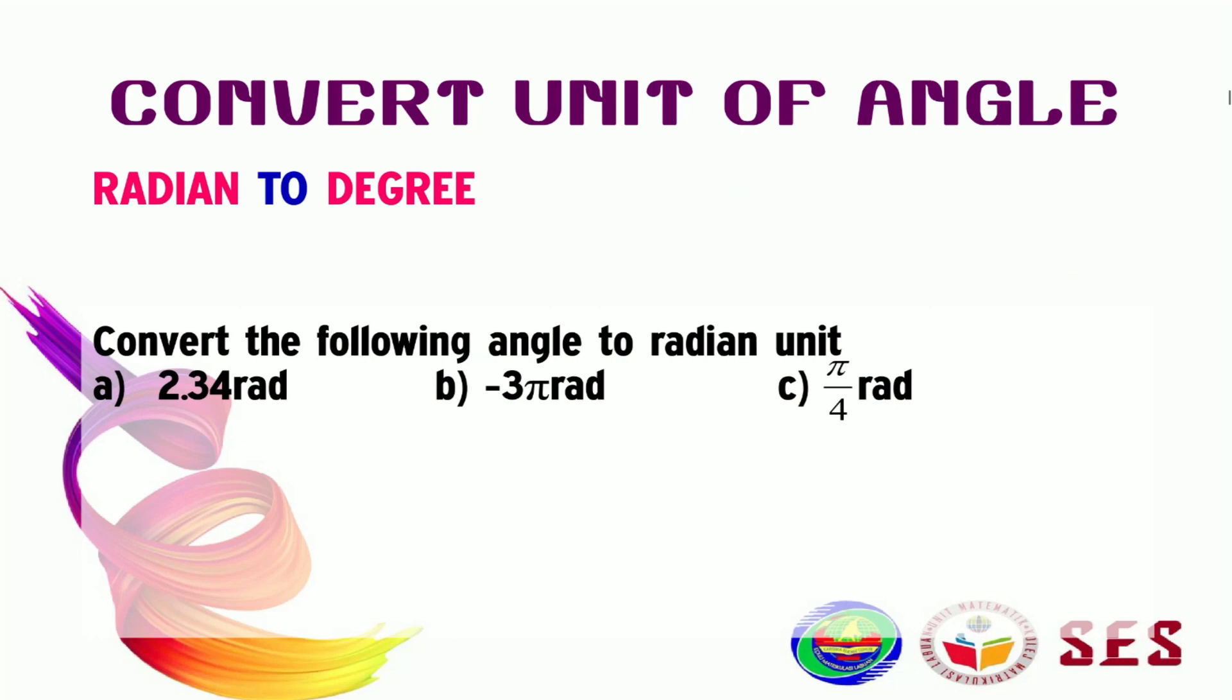Now, what if we want to convert from radian to degree? Similar concept as in the previous slide, we know that in a full rotation, 2π radian is equal to 360 degrees. So, if I want to find just one radian, I'm going to divide 360 degrees over 2π. This one will become 180 degrees over π.